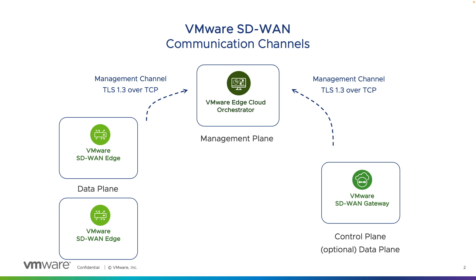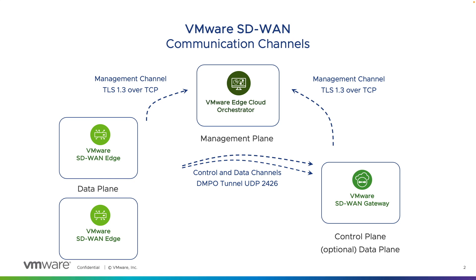If successfully authenticated, edges will establish tunnels to their primary and secondary gateways using the patented DMPO tunnel protocol. This will be the same over all available WAN link circuits, public and private. All traffic is IPsec encrypted, and on top of that the packet is encapsulated in a UDP 2426 header. For communication between the data plane components, for instance between edges and gateways, that is also sent via the DMPO tunnel using UDP 2426, which again is also IPsec encrypted.